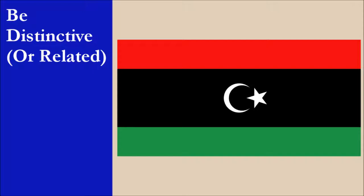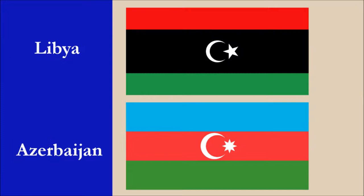A number of countries use a similar crescent and star design on their flags, and of course many countries use a horizontal tricolor. The closest flag to Libya's in overall looks is that of Azerbaijan. Both flags have a white star and crescent centered on a horizontal tricolor. However, there are a number of key differences: Azerbaijan has blue instead of black, their red stripe is in the middle, their flag has an eight-pointed star, and their stripes are all of equal width. In our view, these differences are enough to make the flags easy to tell apart. For this principle, the flag scores 10 out of 10.